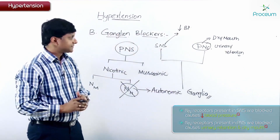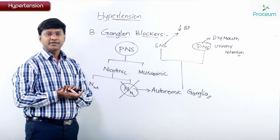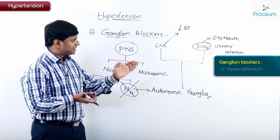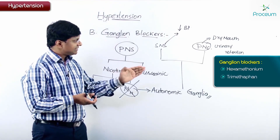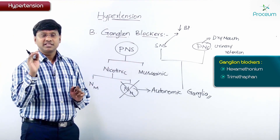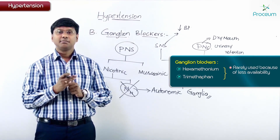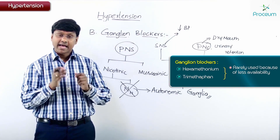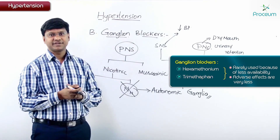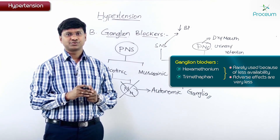The drugs used as ganglion blockers are hexamethonium and trimethaphan. These two drugs are the important ones in this group. However, they are rarely used because of availability difficulties, even though their adverse effect profile is relatively limited.